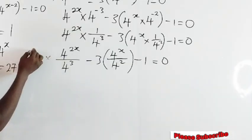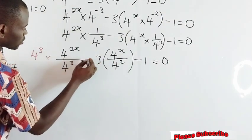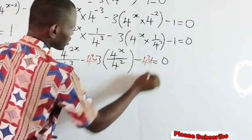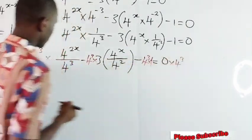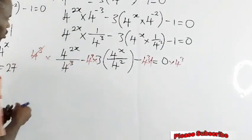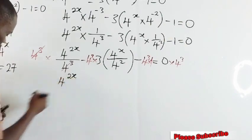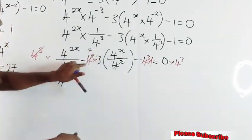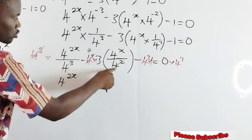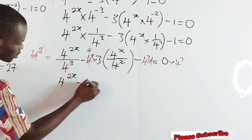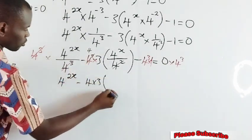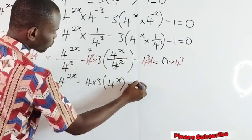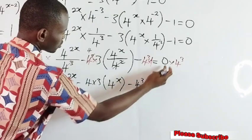I'll multiply every term with 4 raised to the power of 3. So 4 raised to the power of 3 will cancel 4 power of 3, leaving 4 raised to the power of 2x. Then 4 raised to the power of 3 cancels 2 out of the power of 3 leaving 4 remaining, since 4 power of 3 means the 4 is three times but we only have 2 here — so 1 remains, giving 4 times 3. Then we have 4 power of x remaining, and 4 power of 3 multiplying 1 gives 4 power 3, equal to 0.